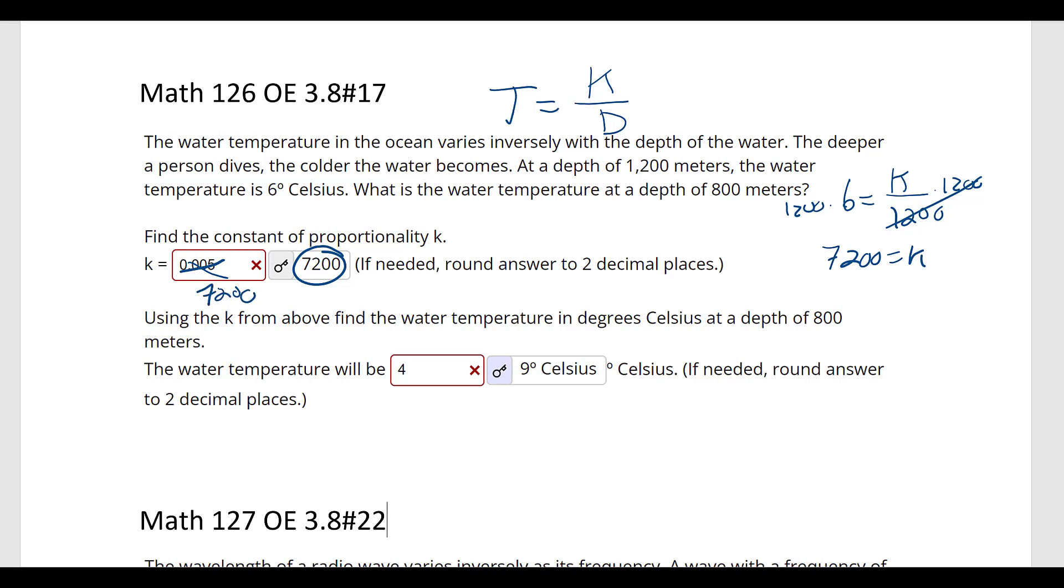So 7,200 equals k. And it says using k from above, find the water temperature in degrees Celsius at a depth of 800. So this is less steep, so the temperature should be more, not less. So we'd have temperature equals 7,200 divided by 800. And we get 9. That's where the 9 degrees Celsius comes from.